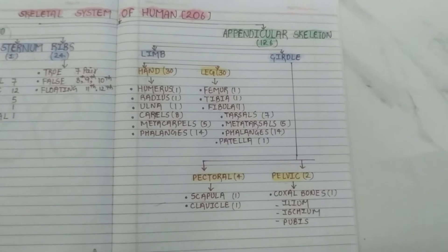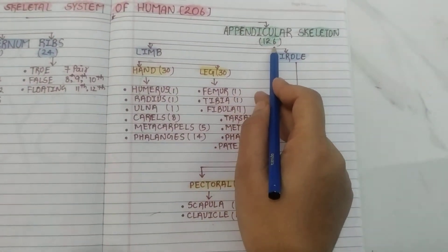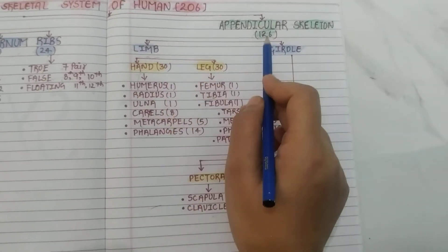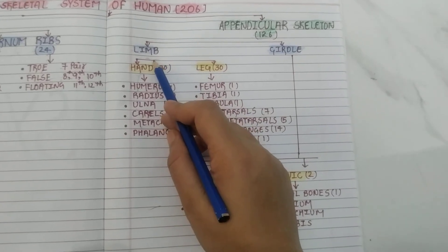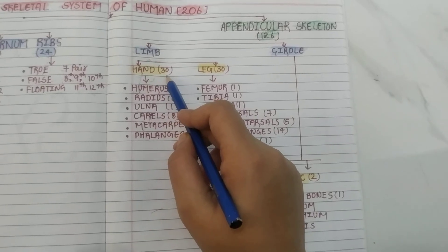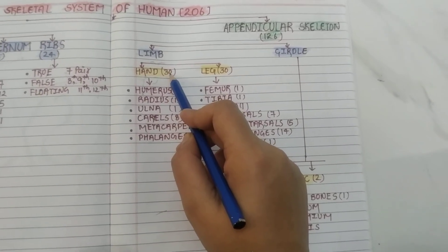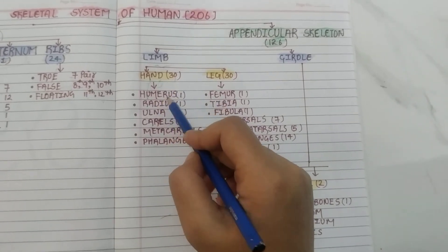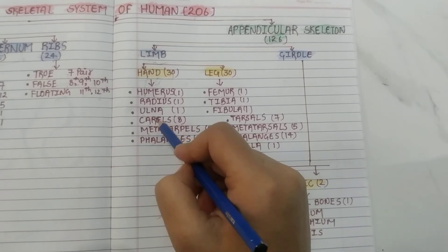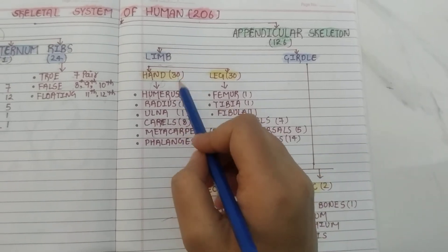Now the appendicular skeleton includes 126 bones. I classify this into limbs and girdles. For limbs, we talk about hands and legs. Each hand has 30 bones, so both hands have 60 bones. The bones of the hand are: humerus (1), radius (1), ulna (1), carpals (8), metacarpals (5), and phalanges (14), totaling 30 bones per hand.